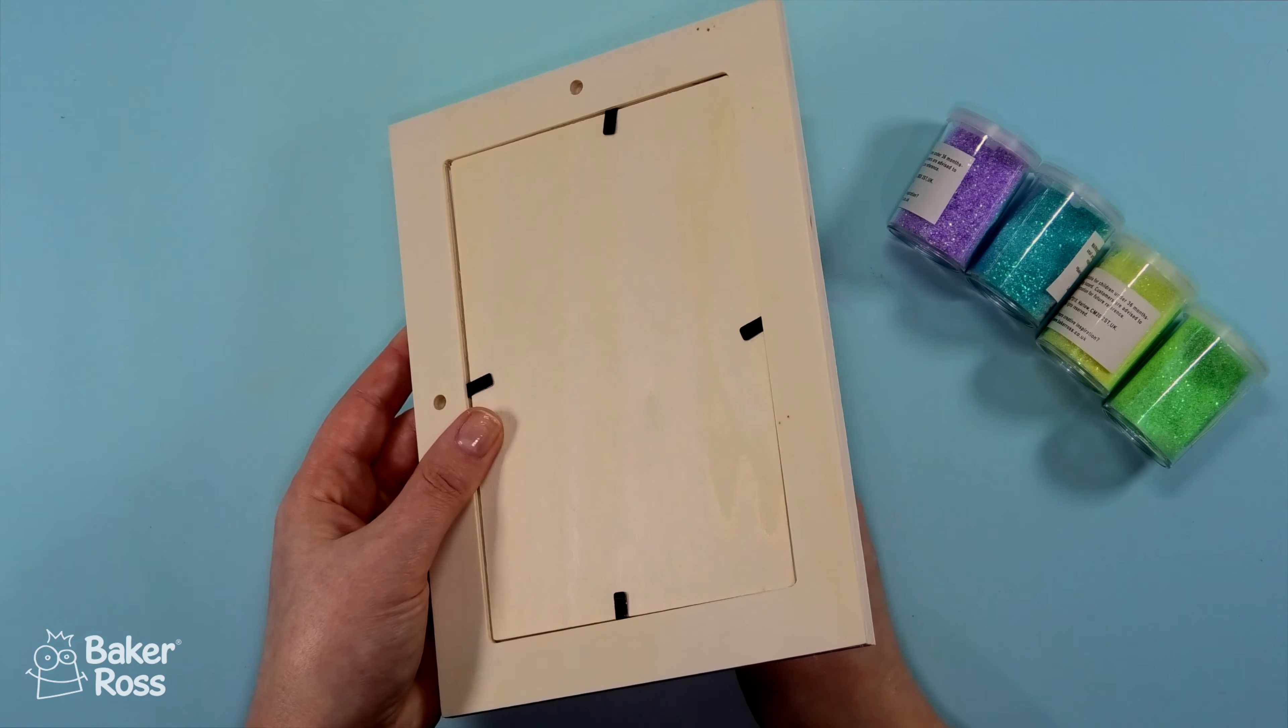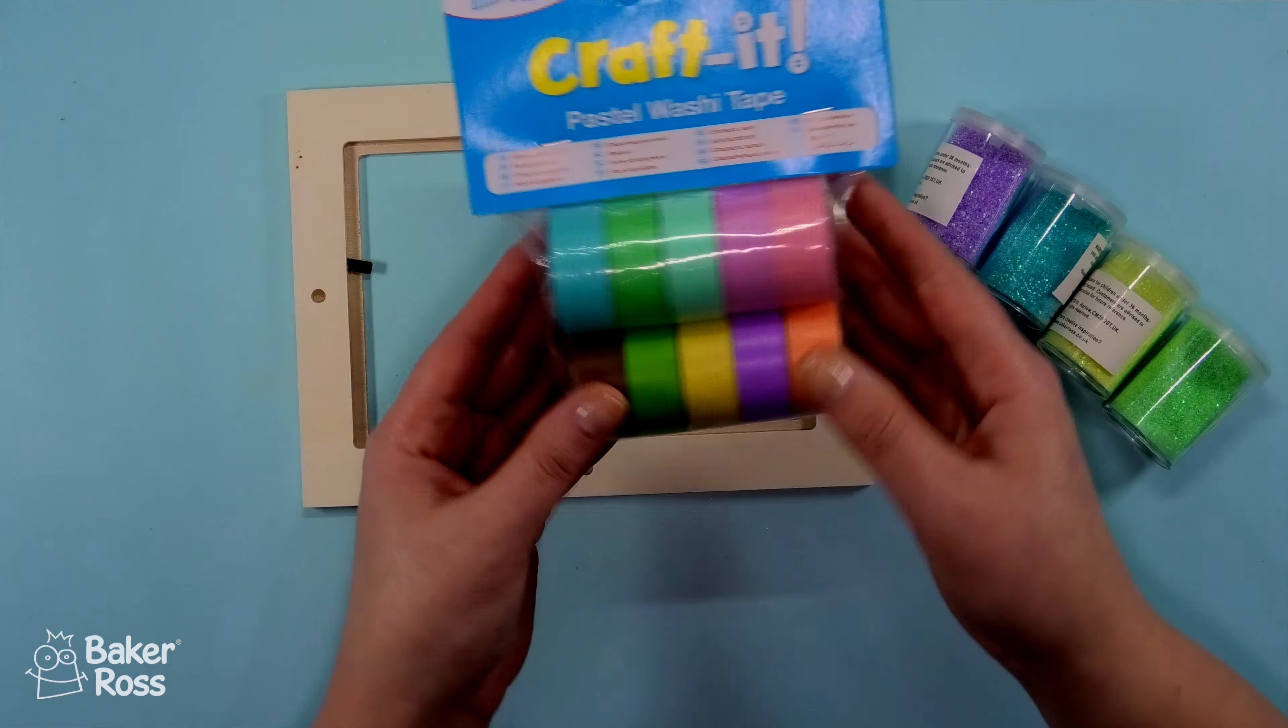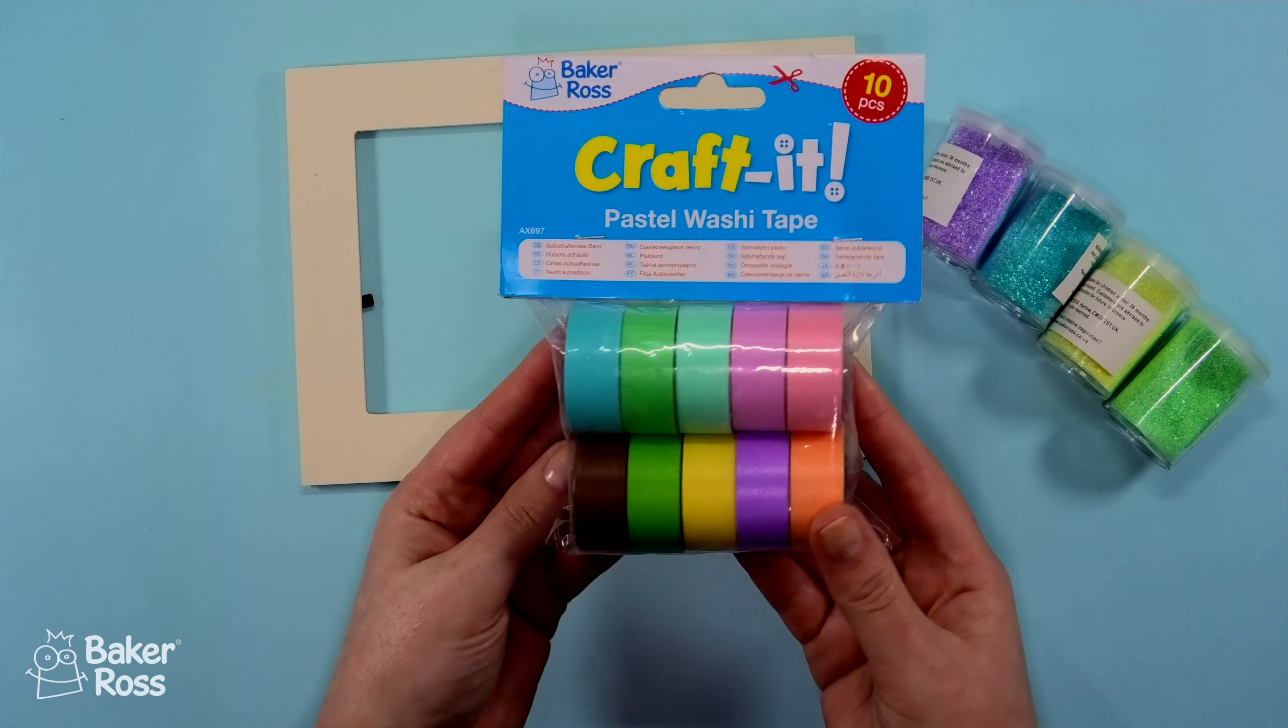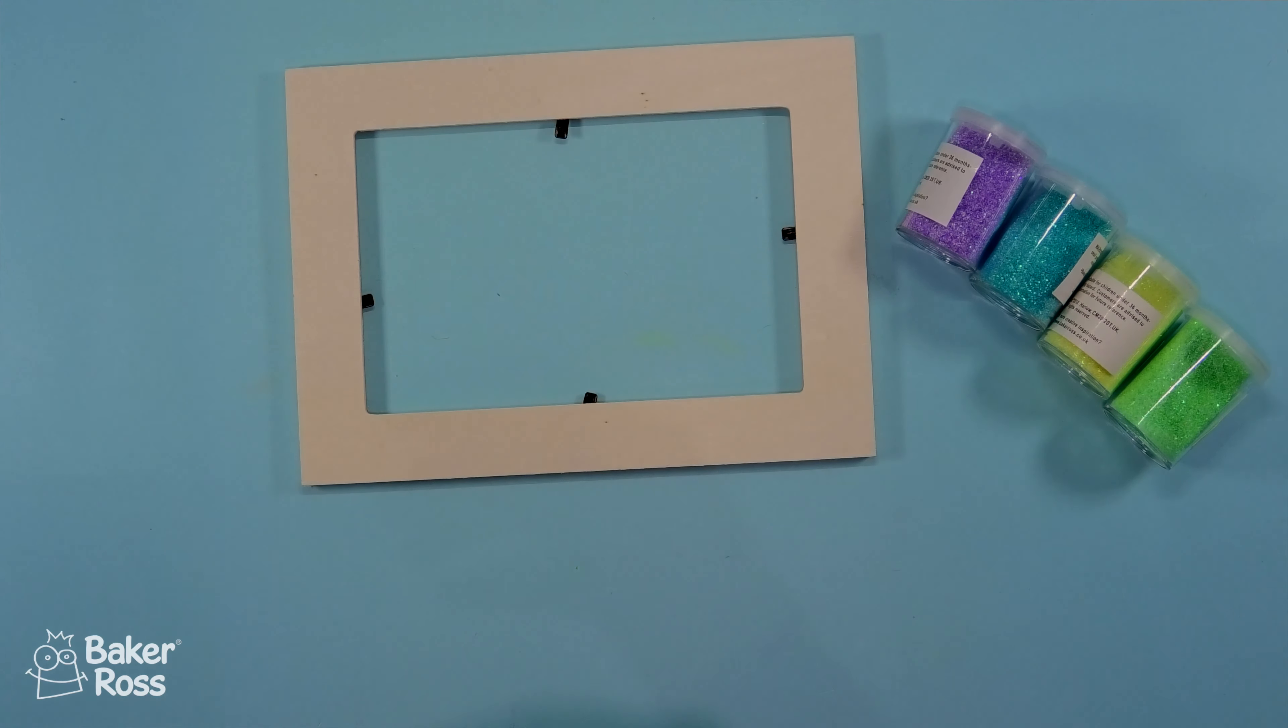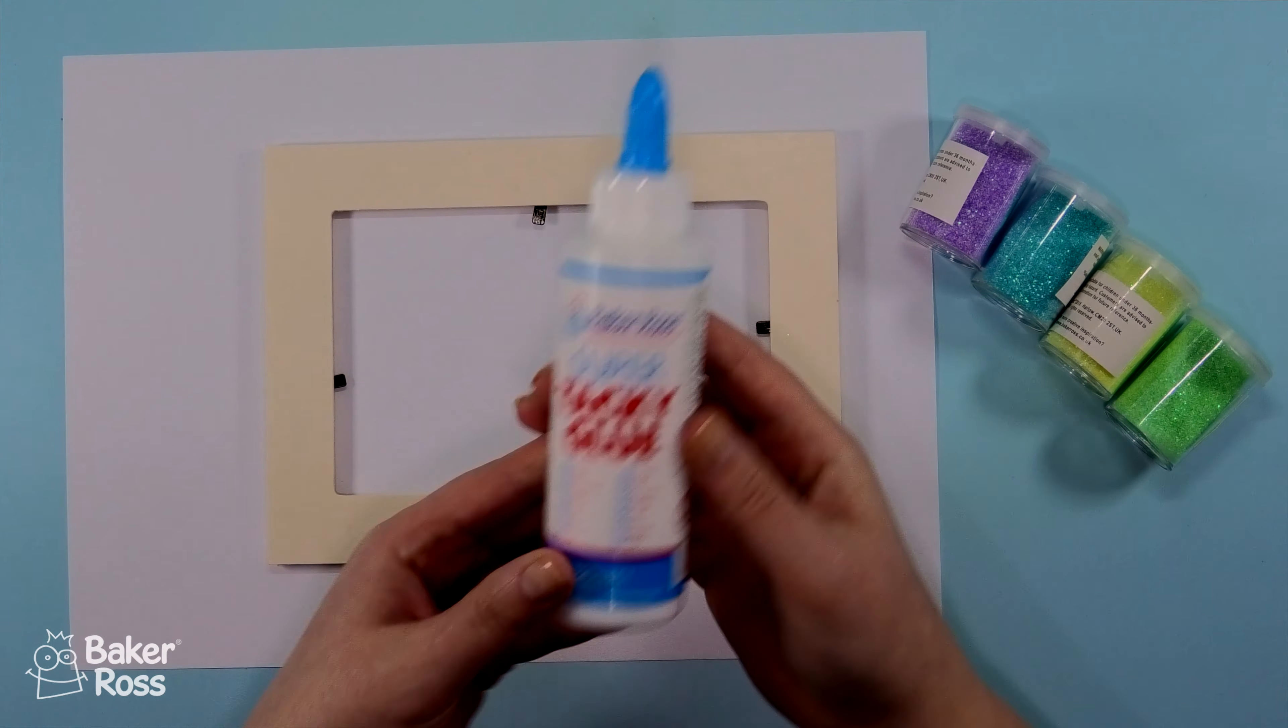Now we're going to work on a glittery frame. Now I know that glitter scares quite a lot of people. You could definitely use washi tape instead if you prefer and just cover this in washi tape to make a nice rainbow decoration. However I'm going to go in with the glitter and give you some tips on how to keep the glitter somewhat contained.